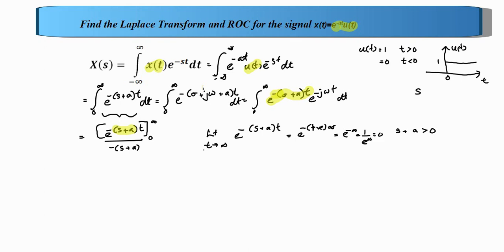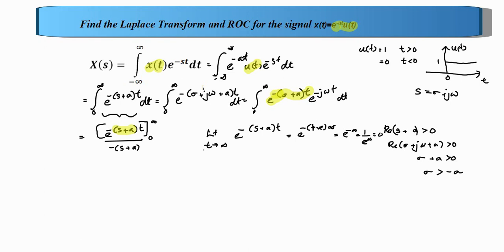Only the real part matters for convergence, not the complex portion. So we can rewrite: the real part of s plus a greater than 0. Since s equals sigma plus j omega, the real part is sigma plus a, giving us sigma greater than minus a. In other words, when the real part of s is greater than minus a, the limit gives 0.